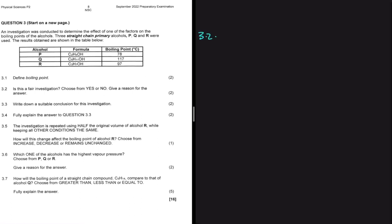3.2 is saying, is this a fair investigation? Choose from yes or no, and give a reason for the answer. We have an investigation conducted to determine the effect of one of the factors on the boiling points of the alcohols. Three straight chain primary alcohols, P, Q and R, were used. The results obtained are shown in the table below, as you can clearly see.